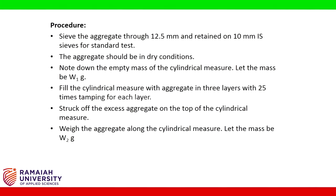Procedure: Sieve the aggregate through 12.5 mm and retain on 10 mm IS sieves for the standard test. The aggregate should be in dry condition. Note down the empty mass of the cylindrical measure — let the mass be W1 grams. Fill the cylindrical measure with aggregate in 3 layers with 25 tamping strokes for each layer.